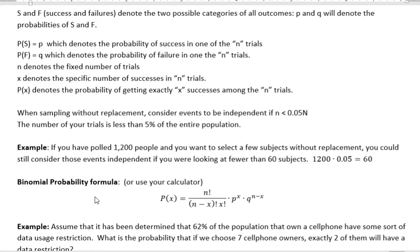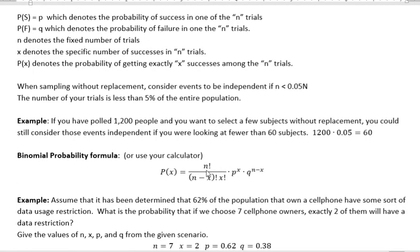The binomial probability formula is here. And again, N is the number of fixed trials. X is the number of successes in that trial. Probability of success is P, of failure is Q. So you can see that, and you're welcome to use that. But I also have done a video showing you how to use your calculator for binomial probabilities. So that's what I would suggest that you use.